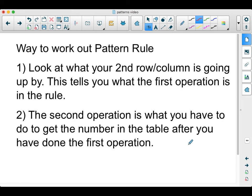What we want to do is look at the second row or column and see what it's going up by. This would tell us what the first operation to do. Second operation is what you'd have to do to get to the number after you've done the first operation.